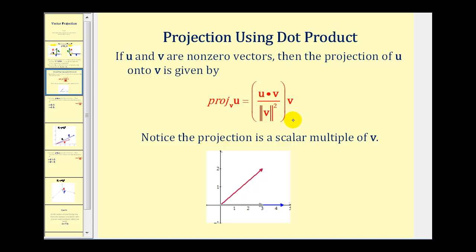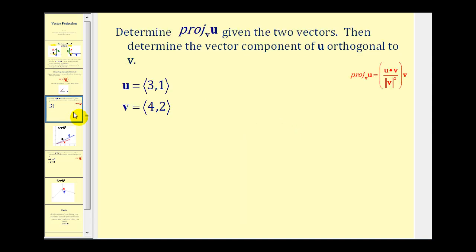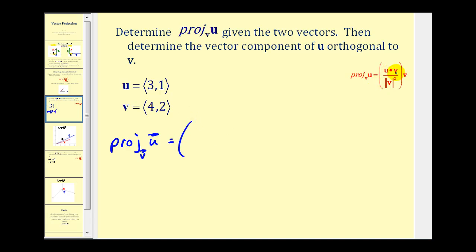First, we'll take a look at an example in R two. We want to determine the projection of u onto v given these two vectors, and then determine the vector component of u that's orthogonal to v. Here's our formula: the projection of u onto v equals u dotted with v, divided by the magnitude of vector v squared, times vector v. Let's go ahead and determine the dot product.